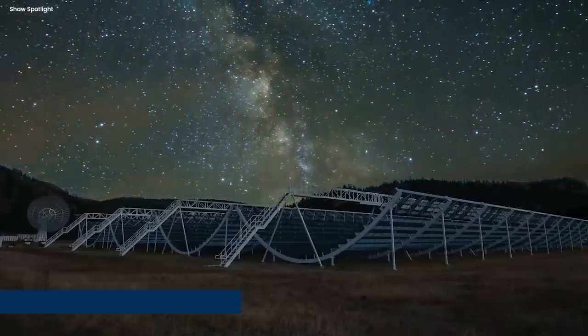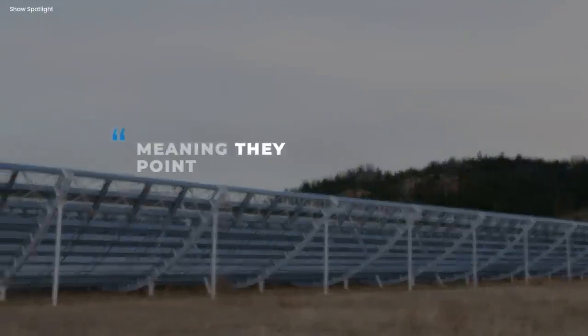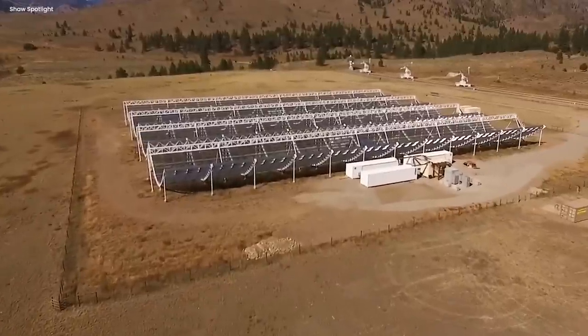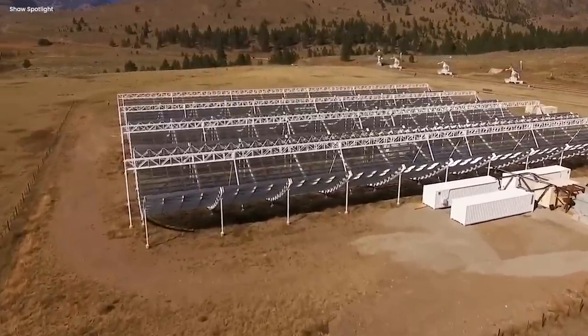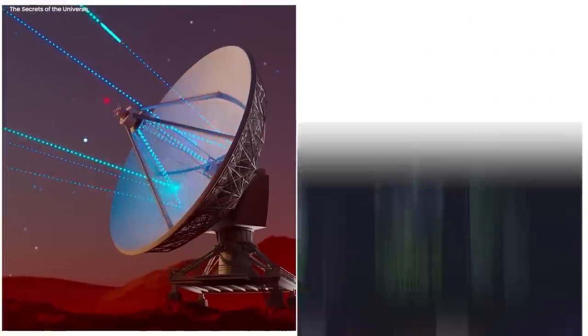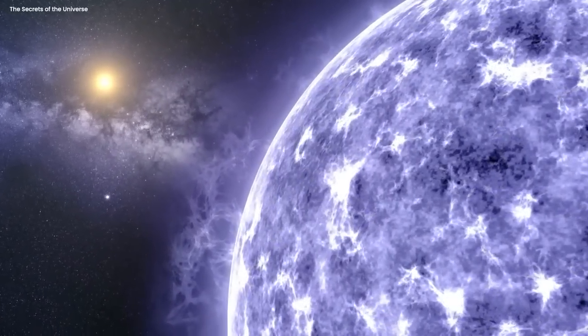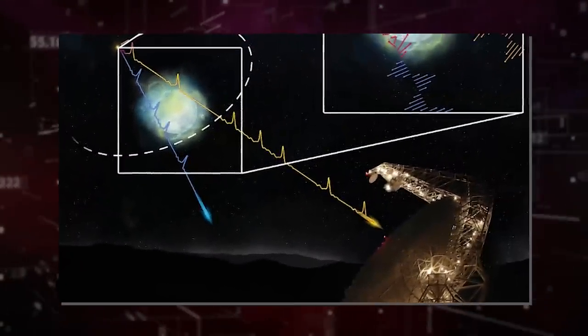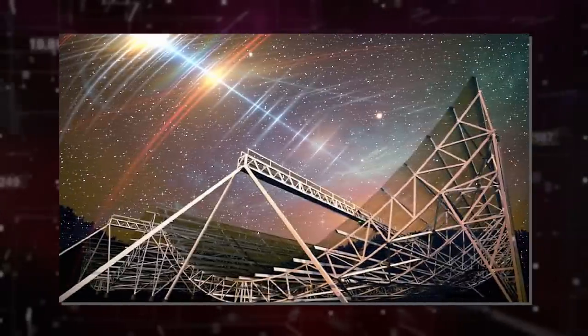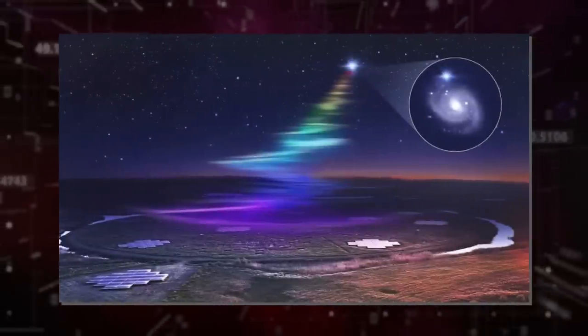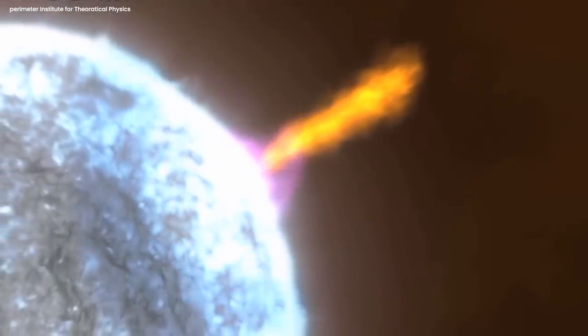These antennas are arranged in a fixed cylinder configuration, meaning they don't move or point at specific targets like traditional telescopes. Instead, CHIME captures signals from a large portion of the sky all at once, making it ideal for studying fast radio bursts and other transient events. This isn't something most telescopes can do.